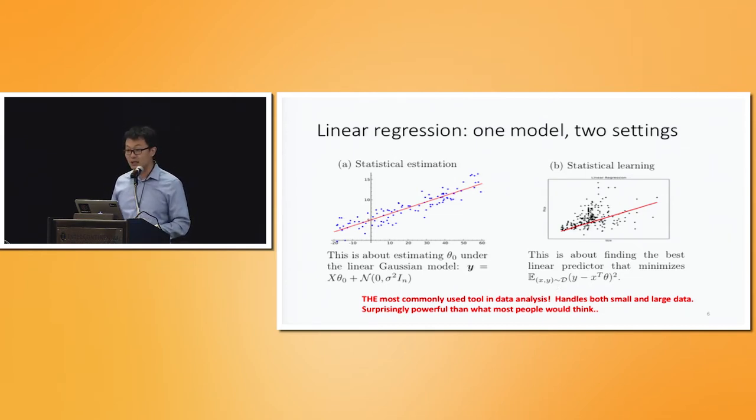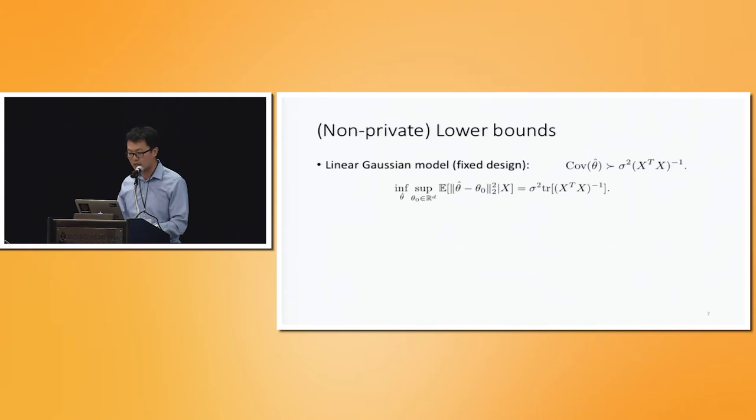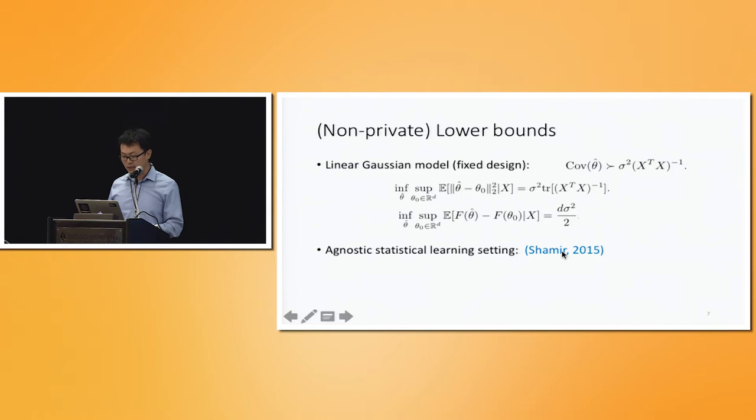So in both settings, these are extremely well studied, and there are very concrete, very precise lower bounds. In the linear Gaussian model, we have the old Cramer-Rao lower bounds. We have the minimax lower bounds, saying that estimation error has to be greater than something. We also have the prediction lower bounds, saying that the prediction error in the future must be greater than this number. And for the statistical learning setting, it's a little harder to find, but Ohad Shamir had a paper in 2015 showing that when we constrain the data domain by Euclidean balls in terms of this X and this label Y, and also the parameter space theta, then we can write down a lower bound. This is also the minimax rate of prediction in terms of the statistical learning setting.